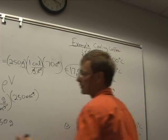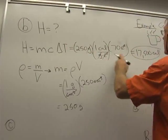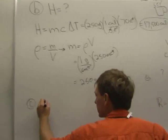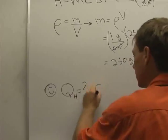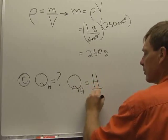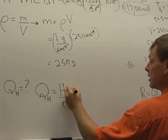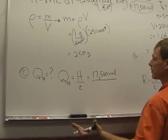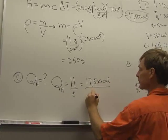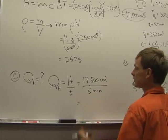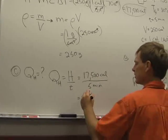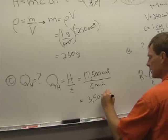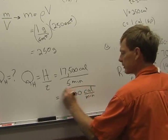Now finally, C. We've calculated the energy loss, 17,500 calories. Let's calculate the heat transfer rate. The heat transfer rate is the rate at which the heat was transferred in thermal energy. So that's the rate at which that 17,500 calories of energy was lost to the atmosphere, and it took five minutes.